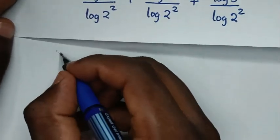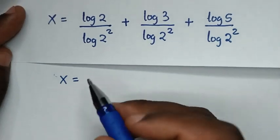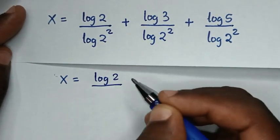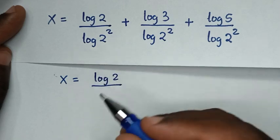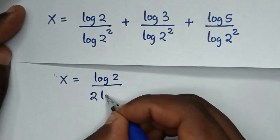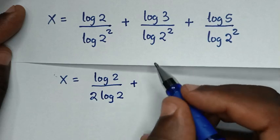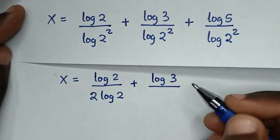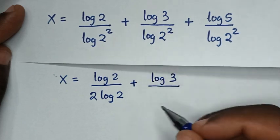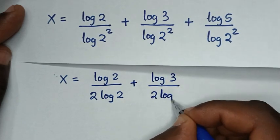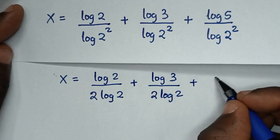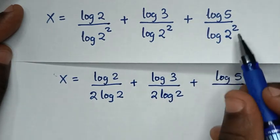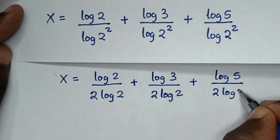So x equals log of 2 over log of 2 squared — the square moves to the front giving 2·log of 2 — plus log of 3 over 2·log of 2, plus log of 5 over 2·log of 2.